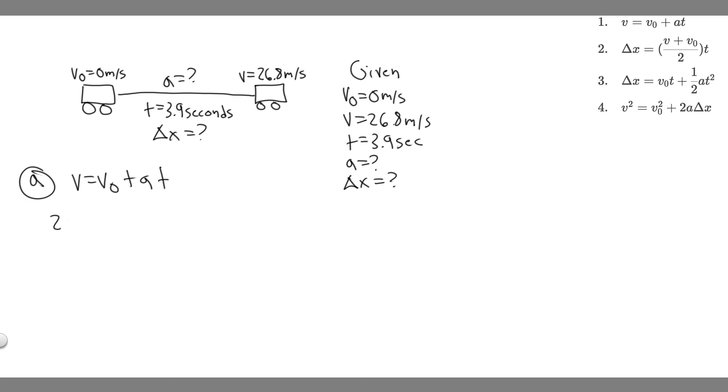So plugging it in, v is 26.8, which equals v sub zero, which is zero, plus the acceleration. So zero plus anything is just that. So A, which is what we're solving for, then multiply by t, which is 3.9. So dividing by 3.9, that's going to give us A.